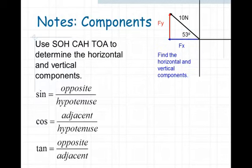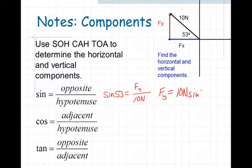Now to find the values of fx and fy, we need to use SOHCAHTOA, our trig functions. Let's see what the sine function gets us. If we figure out the sine of 53 degrees, we've got to calculate the opposite side, which in this case is f sub y, and divide that by 10 newtons. We solve for f sub y by cross multiplying and taking 10 newtons and multiplying it times the sine of 53 degrees.